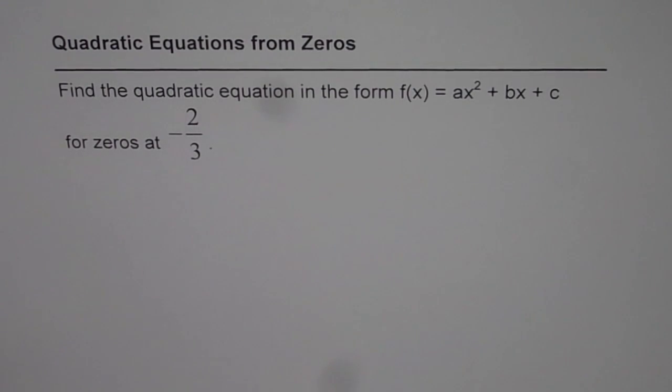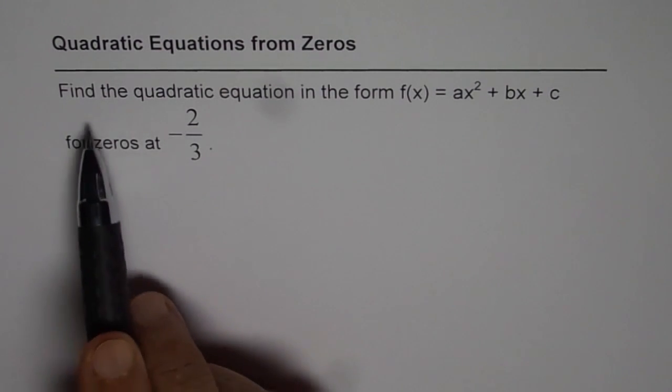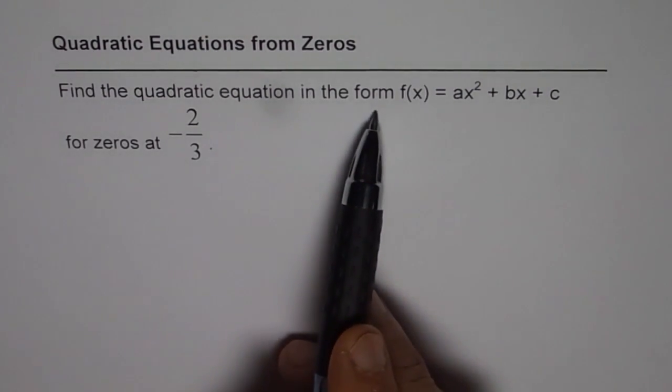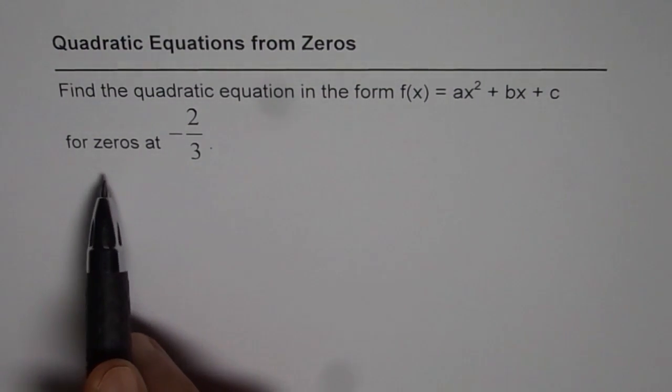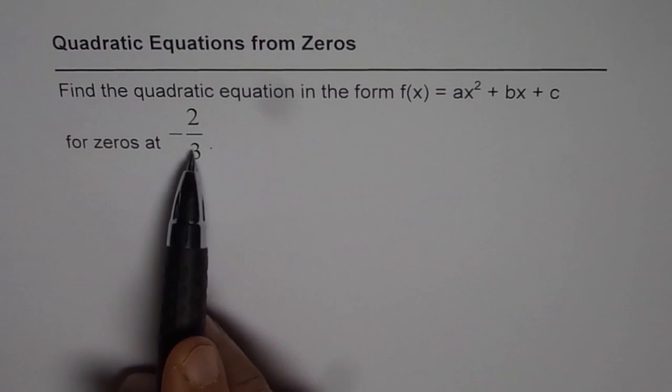In this video, we will learn how to find quadratic equation from given zeros. Find the quadratic equation in the form of f(x) = ax² + bx + c for zeros at -2/3.